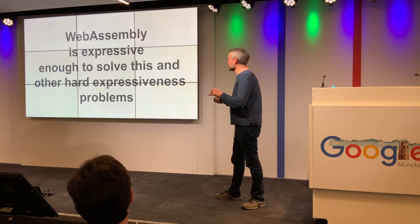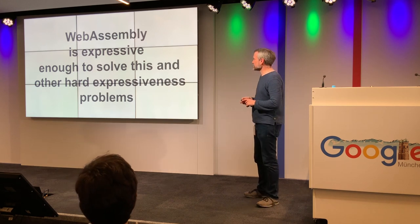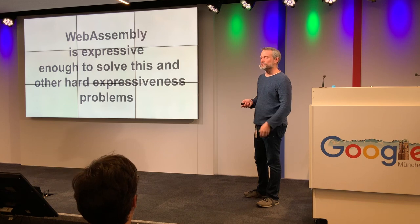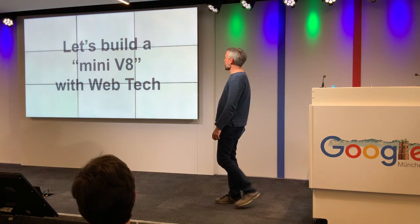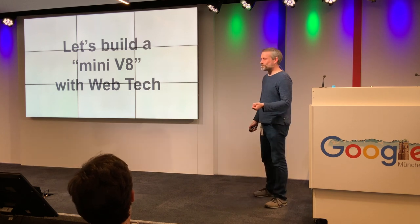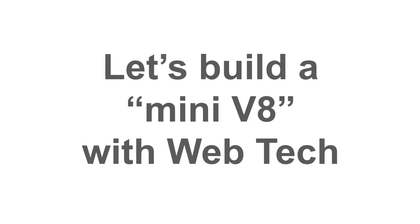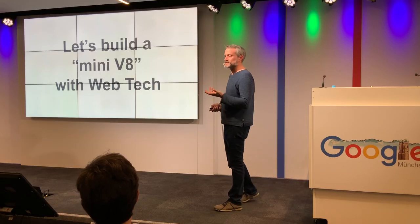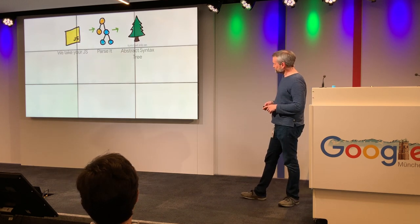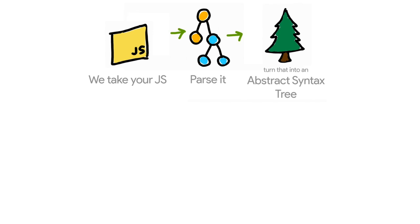That leads into a thought experiment I did last year: how expressive can you get, how can you use it? Let's actually try to build that missing part of the V8 picture - that really hard part - simplified. We're not going to write all the source code; the idea is the same. Theoretically you could do this at scale. That first part of the pipeline where I said it was possible in JavaScript - let's see how that works. Because if we're going to build a whole pipeline with web tech, part of it we could do with JavaScript, and the hard part we'll do with WebAssembly.